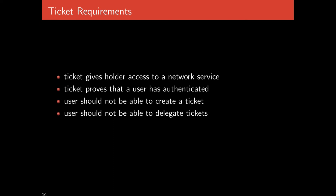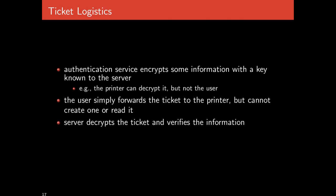Users should not be able to create tickets — that would be bad. They also should not be able to delegate tickets: Alice should not be able to get a ticket to print and give it to Bob. The authentication service encrypts information with a key known to the server, like the printer. The printer can decrypt it but not the user — the user simply forwards the ticket but can't create or read it.